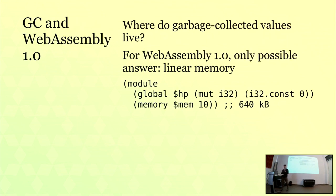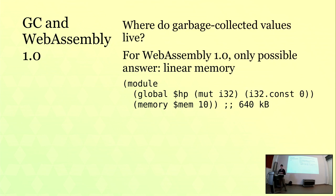If you have a language with garbage collection — say Scheme, for example — and you want to target WebAssembly 1.0, where are your values going to live? In WebAssembly 1.0, we have one answer: what we call linear memory. Linear memory is just memory with a simplified layout — a buffer accessed by index. We're going to ask for 10 pages of memory (each page is 64 kilobytes, giving us 640KB) and use it all for our garbage-collected memory. We'll have a heap pointer and just bump-pointer allocate from beginning to end.